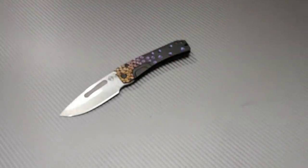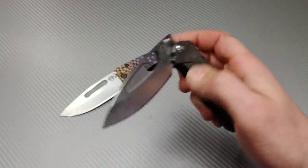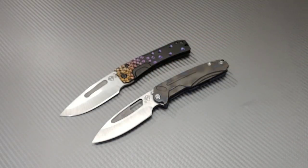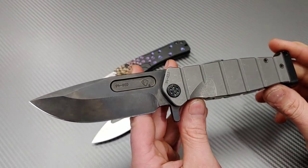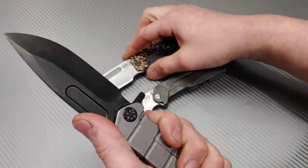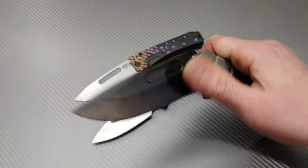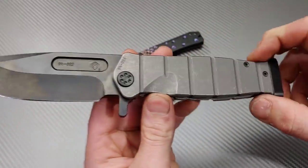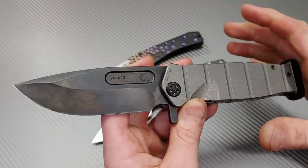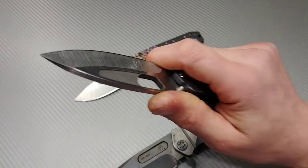Then we have the Medford Infraction, also in S35VN titanium frame lock. This one's also a flipper. And we got the big daddy, the USMC Fighter by Medford. You can see the size difference there. I mean, this thing is an absolute beast of a knife. I do have a review that recently went up on this one. This one's also in S35VN blade steel, titanium. And it's supposed to be like a K-bar, a folding K-bar basically. And he actually makes the USMC Fighter fixed blade. This is the USMC Fighter folder or flipper.